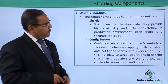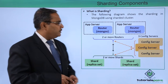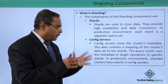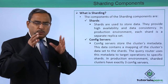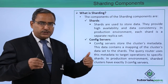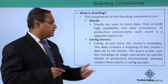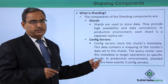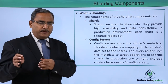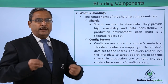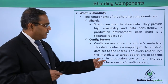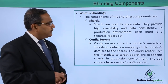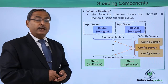The next component is the config servers. In the previous diagram, we were having three config servers. Config servers store the cluster's metadata, and this data contains a mapping of the clustered data set to the shards — how the data has got mapped onto the shards. That metadata will be kept in the config servers. The query routers use this metadata to target operations to specific shards, so the query router accesses the config server data and accordingly knows on which shard to execute the respective query. In production, sharded clusters have exactly three config servers.